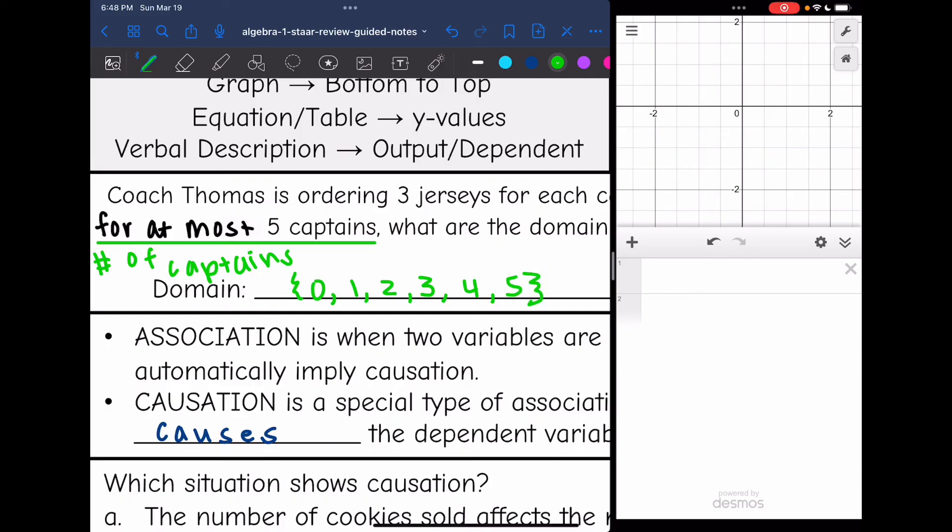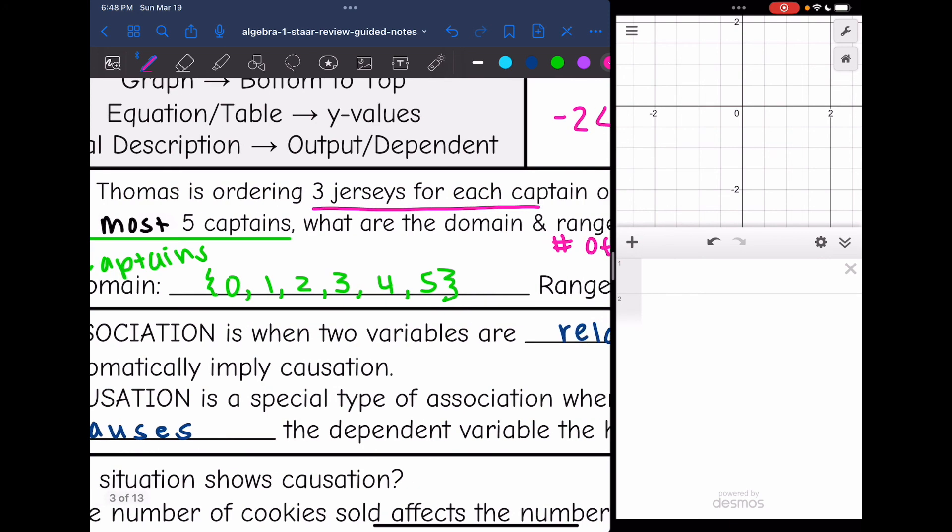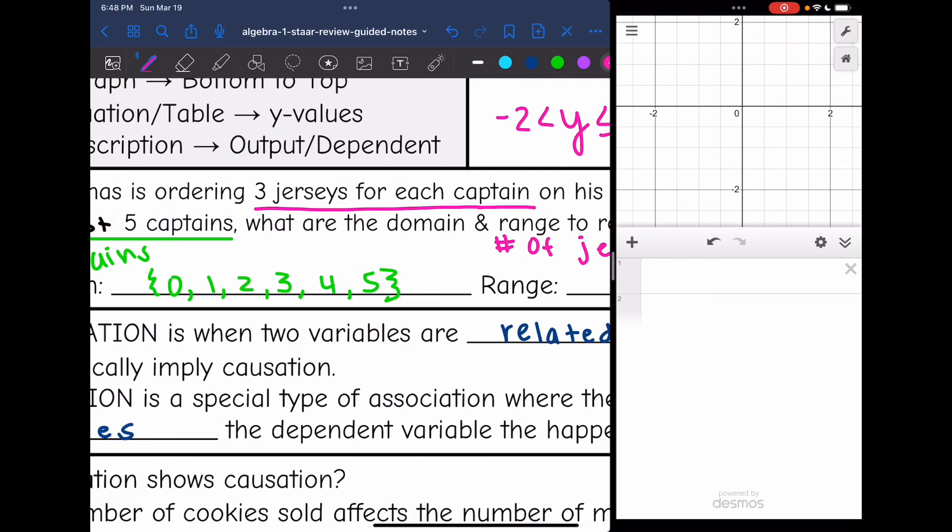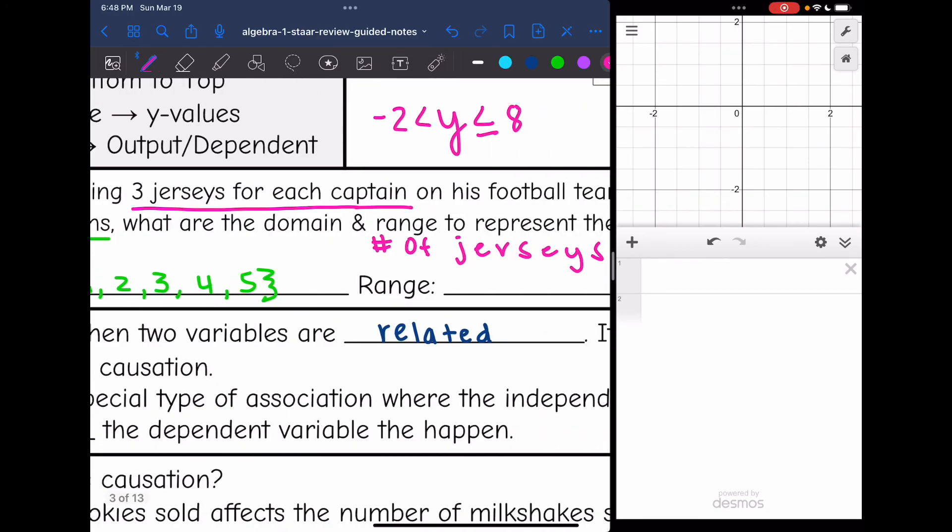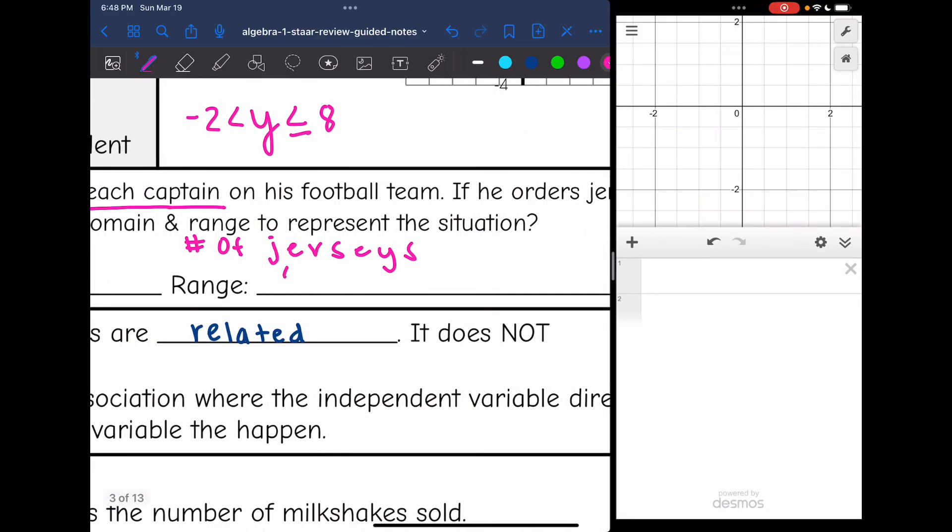And then the range is going to be the number of jerseys. And he's ordering three for each captain. So we will just multiply each of the numbers that we got for the captains by three. So the range will be 0, 3, 6, 9, 12, or 15.